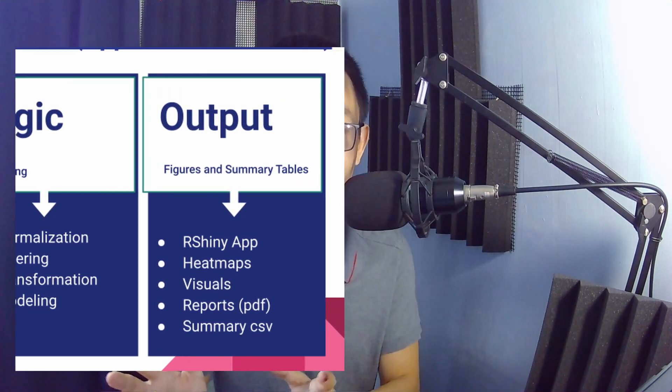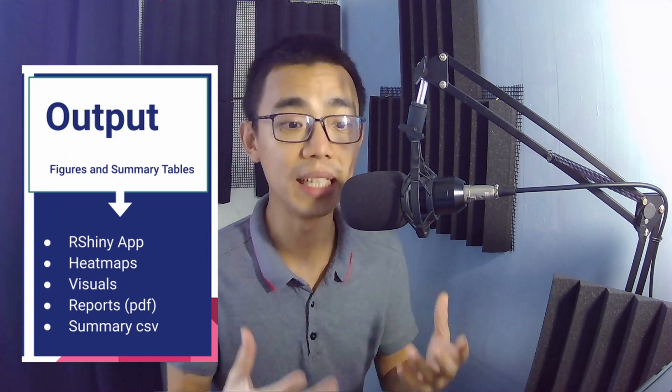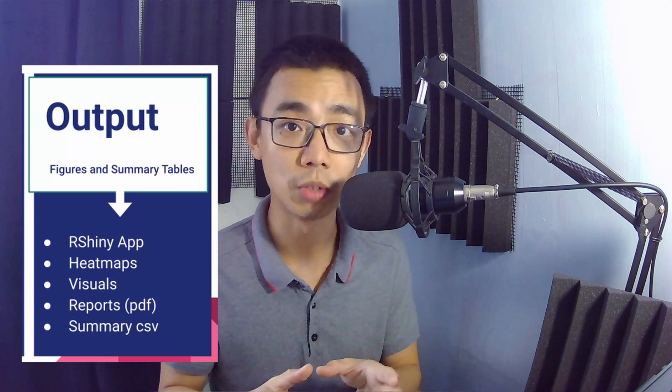All this processing data in the end goes into the third section, which I call the output section. The output section does only one thing: it tries to create figures and summary tables for other people. So the output folder will have things like an R Shiny app, heatmaps, visual reports, and summaries. The main purpose is that I can share this output folder with someone else without them looking into how I actually did all the analysis — which matters for privacy or source code reasons.